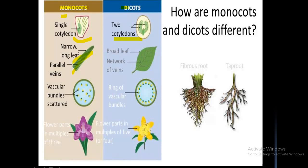Monocot plants have one cotyledon; dicot plants have two cotyledons. In monocots the leaf is narrow, while in dicots the leaf is broad. Monocots have parallel venation; dicots have reticulate venation. In monocots the vascular bundle is scattered so no increase in thickness occurs, whereas in dicots the vascular bundle is arranged in a ring. Monocot flowers have parts in multiples of three; dicot flowers in multiples of four or five.